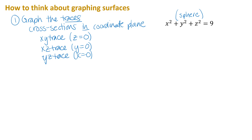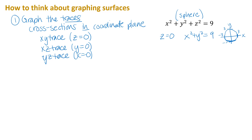For the XY trace, when Z equals zero, I get X squared plus Y squared equals nine. That gives an equation in two variables, and then you can think about the two-dimensional graph of that. I'll do a little two-dimensional sketch in the XY plane of what that looks like — it's a circle of radius three. Notice my hand-drawn picture doesn't have to be a perfect circle, just a sketch.